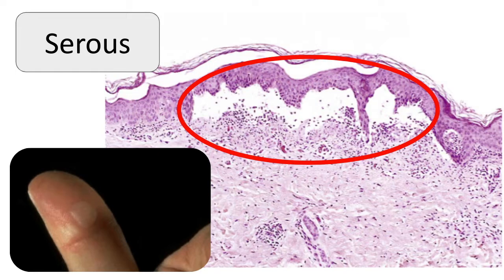When there is leakage of cell-poor fluid into spaces created by a cell injury or into body cavities lined by the peritoneum, pleura, or pericardium, this is known as serous inflammation. This fluid is not infected by destructive organisms and does not contain large numbers of leukocytes, and because of this, the fluid is often fairly clear.